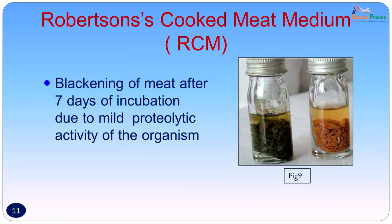Initial pus was also put into Robertson's cooked meat medium. There was blackening of meat after prolonged incubation — usually more than seven days — due to the mild proteolytic activity of the organism. This blackening is compared with the reddening of the meat seen in sacrolytic organisms like Clostridium perfringens.